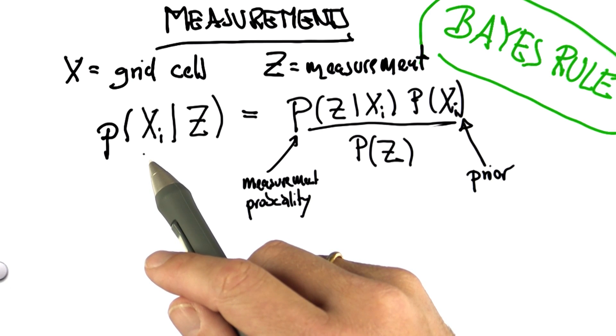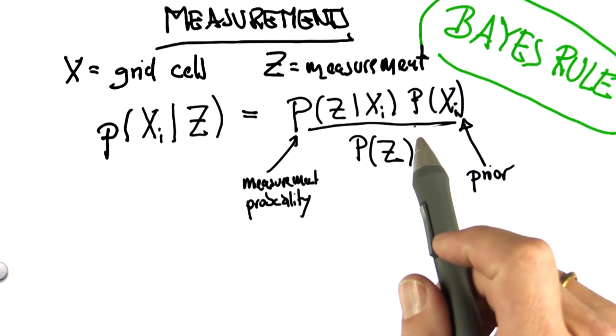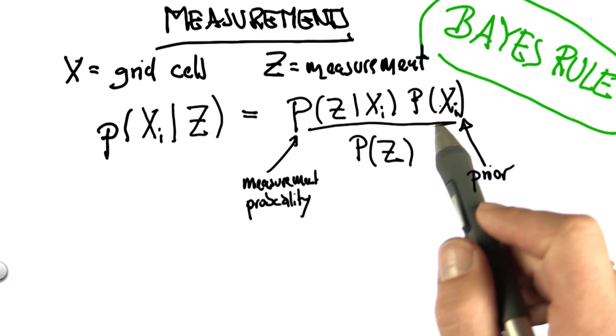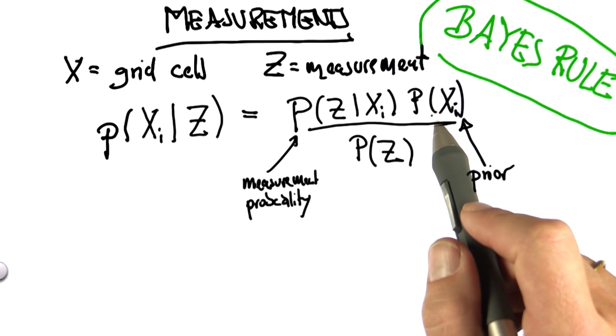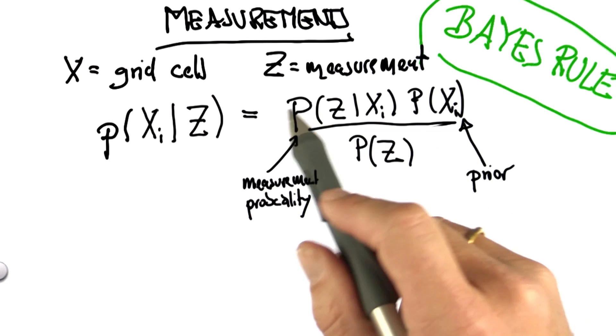You programmed a product between the prior probability distribution and a number. The normalization is now the constant over here, p(z). Technically, that is the probability of seeing a measurement devoid of any location information.